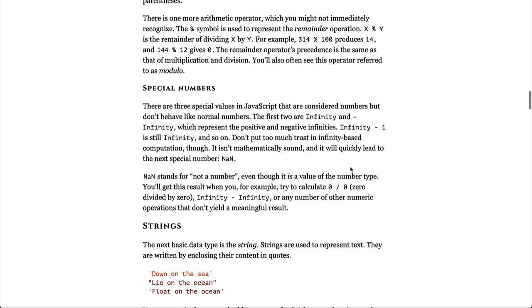There is one more arithmetic operator which you might not immediately recognize. The percent symbol is used to represent the remainder operation. x percent y is the remainder of dividing x by y. For example, 314 percent 100 produces 14 and 144 modulo 12 gives 0. The remainder operator's precedence is the same as that of multiplication and division. You'll also see this operator referred to as modulo.